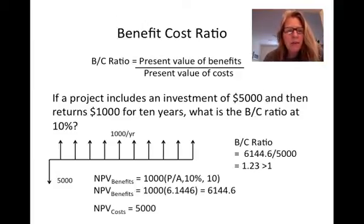So the benefit-cost ratio, I'm going to look at an example of this. If a project includes an investment of $5,000 and then returns $1,000 for 10 years, what's the benefit-cost ratio at 10%? So you see I've drawn a picture there, and then I calculated the present value of the benefits, which is $6,144, and then the present value of the cost is just the initial cost value, and therefore the ratio is 1.23. And it's greater than 1, so we'll go ahead and accept the project.